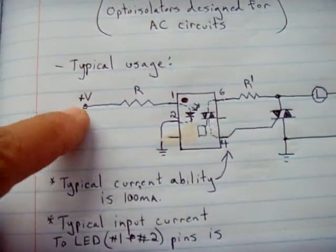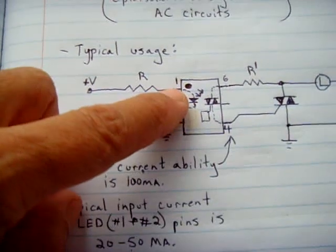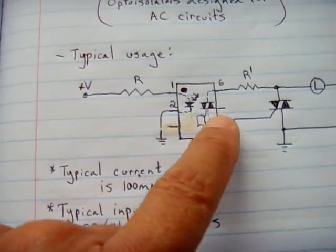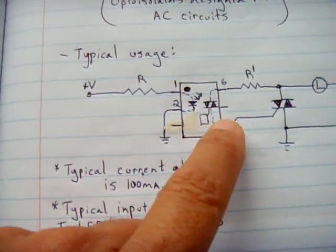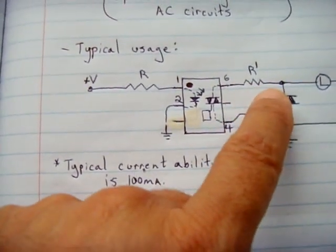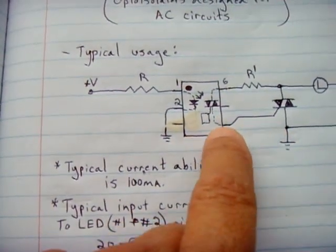How it works is when this side triggers, this LED will come on, shining light onto this side of the circuit, which is basically like a mini triac in here, allowing the alternating current to conduct and close the loop.